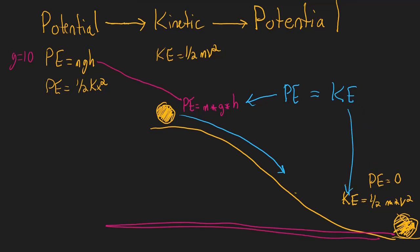All the potential energy got converted into kinetic energy, and all the kinetic energy came from potential energy. Mathematically, we can set them equal: mgh equals one-half mv squared. We can cancel out m since it appears on both sides, leaving us with gh equals one-half v squared. This is quite useful for solving MCAT problems.